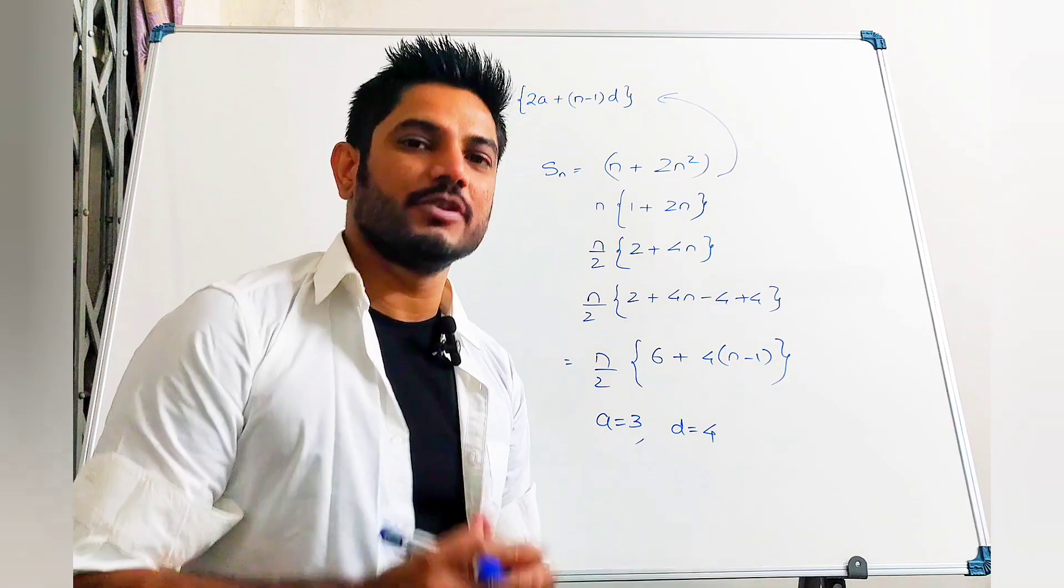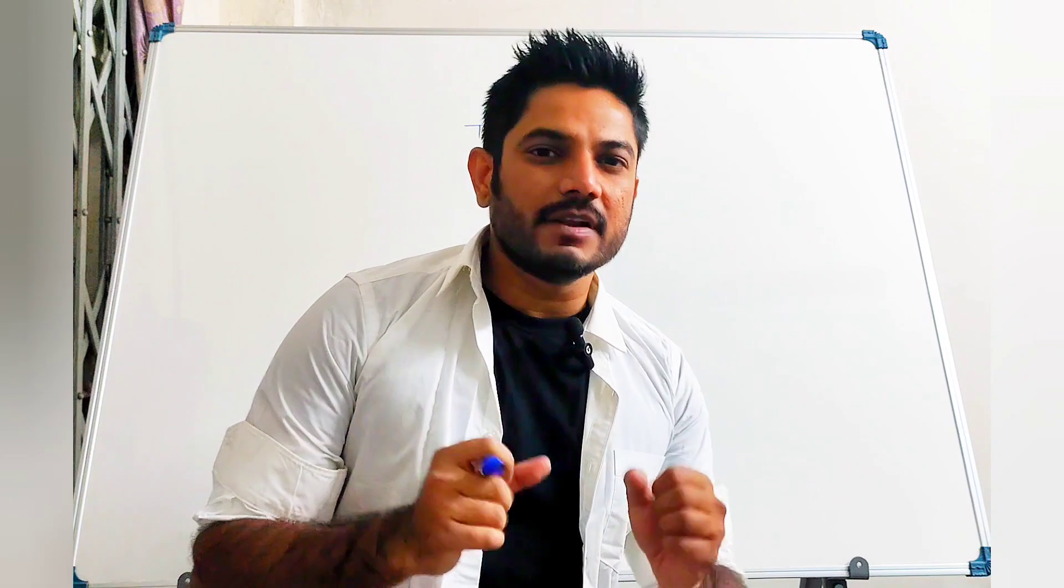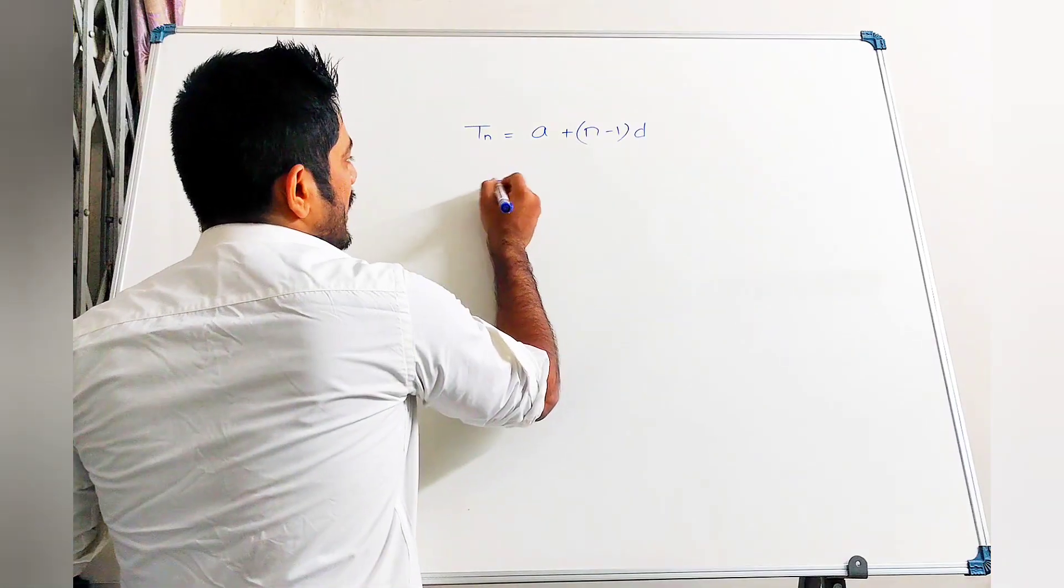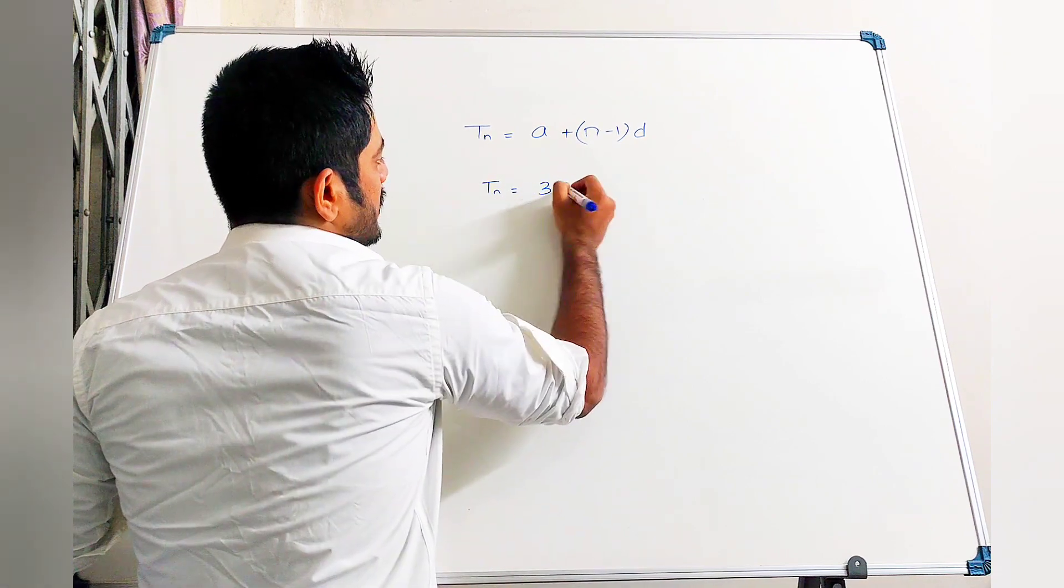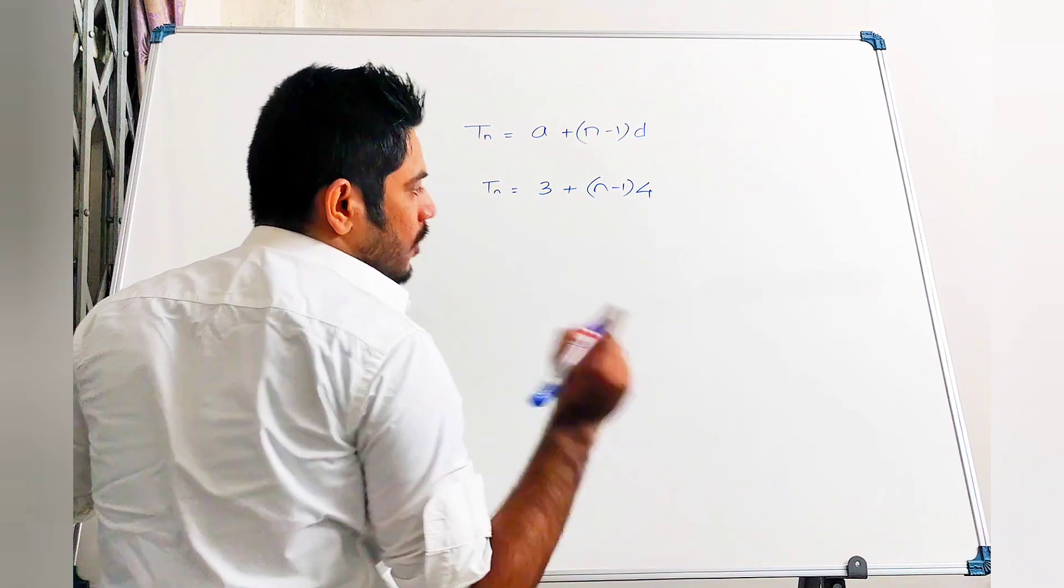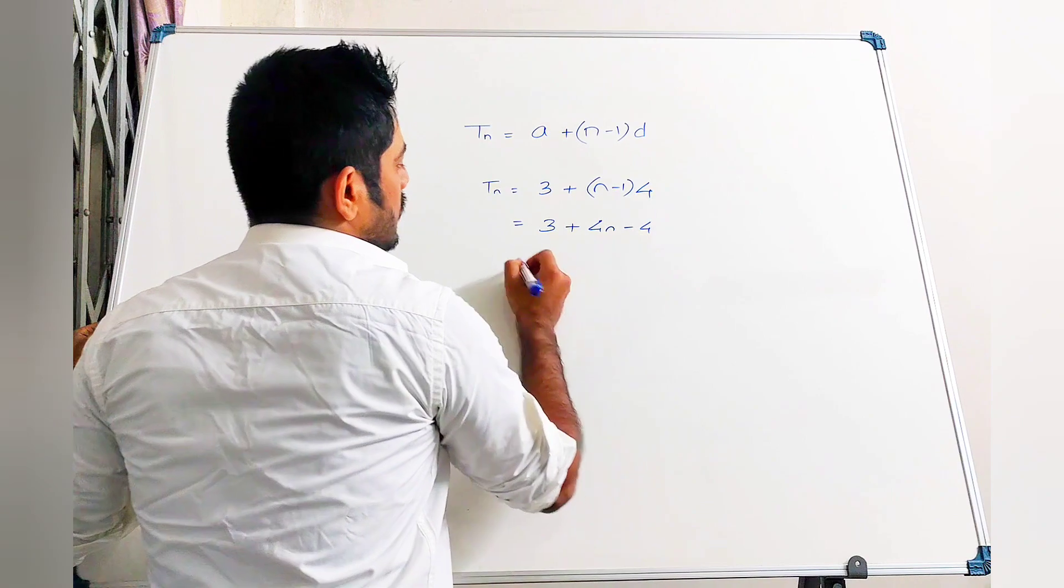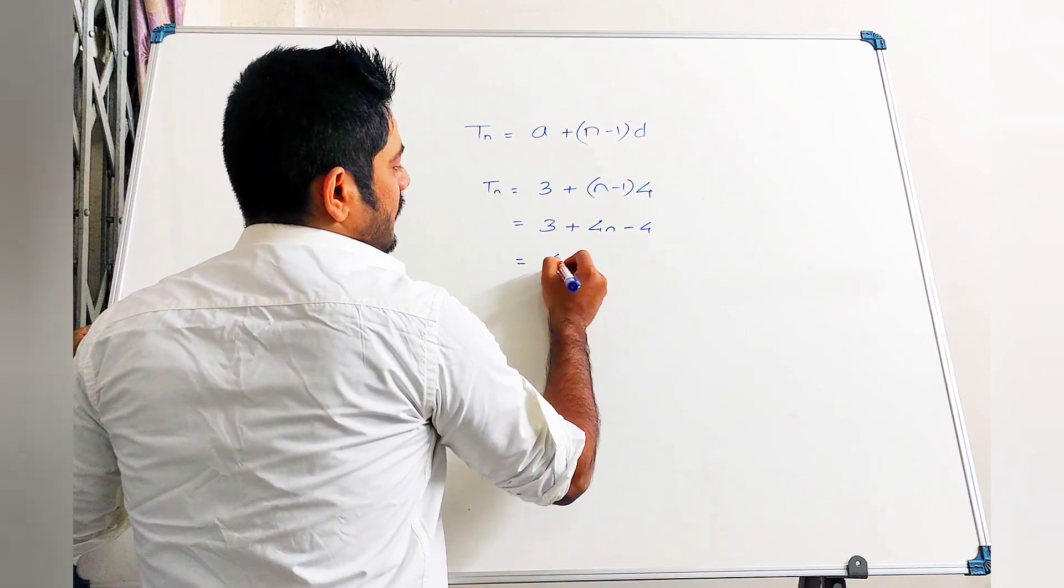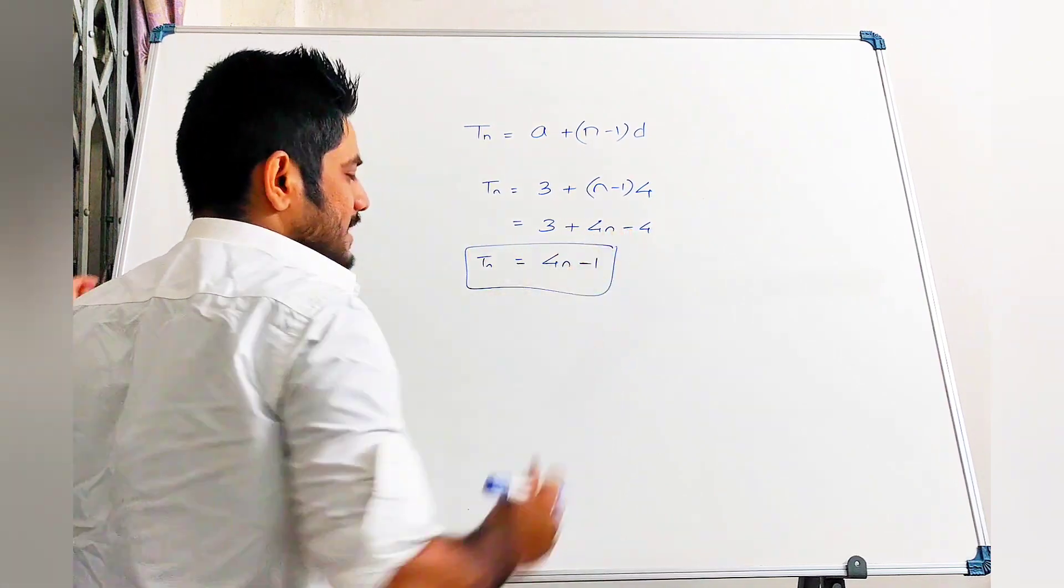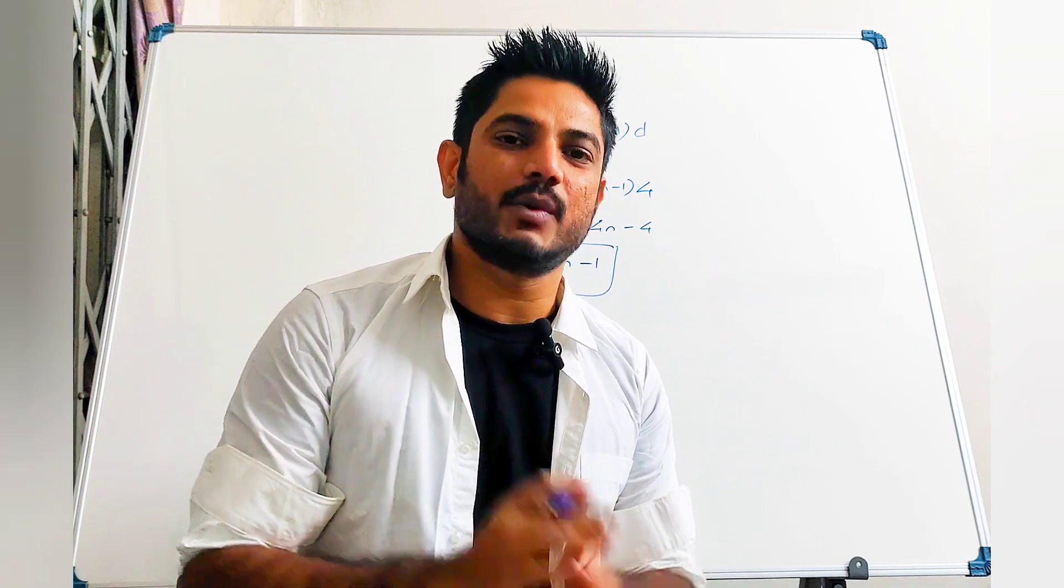Now let's move on to the final step of the solution. The nth term of an AP is given by a plus n minus 1 into d. We have a value of a, n plus 3, n minus 1 times d was 4. Let's simplify it: 3 plus 4n minus 4. I get 4n minus 1.